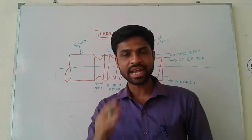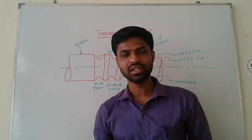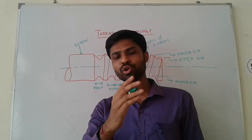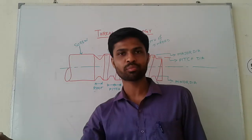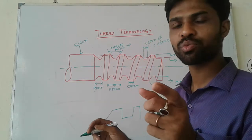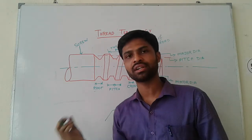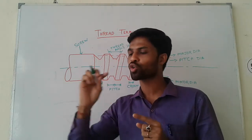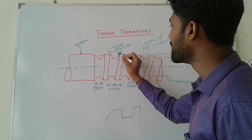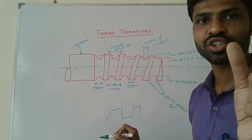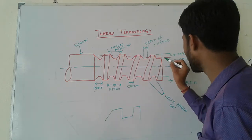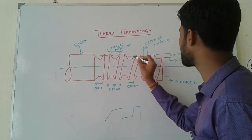One corresponding point to another corresponding point on the thread is called the pitch. We can look at the pitch: one corresponding point, two is another corresponding point — that distance is the pitch. The pitch diameter is the diameter at the mid-point between major and minor diameter.